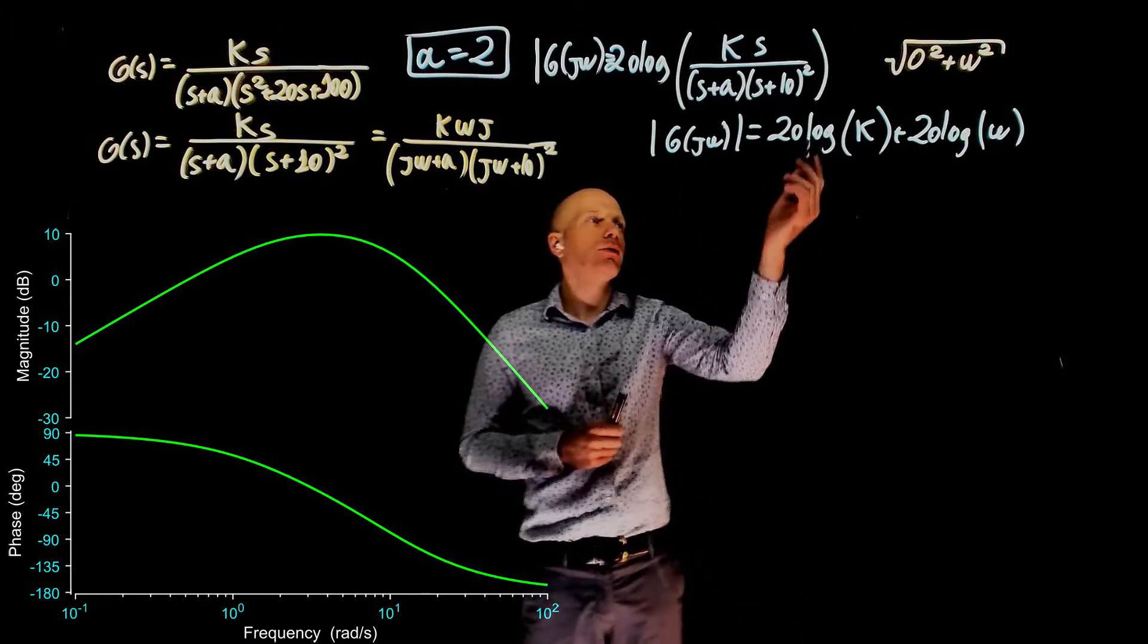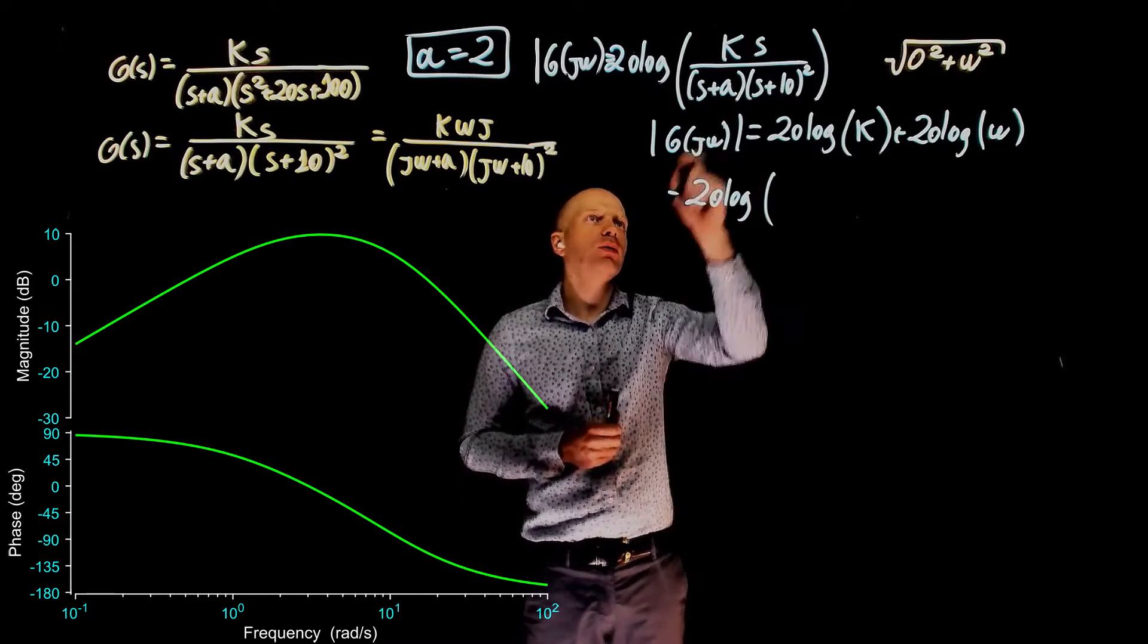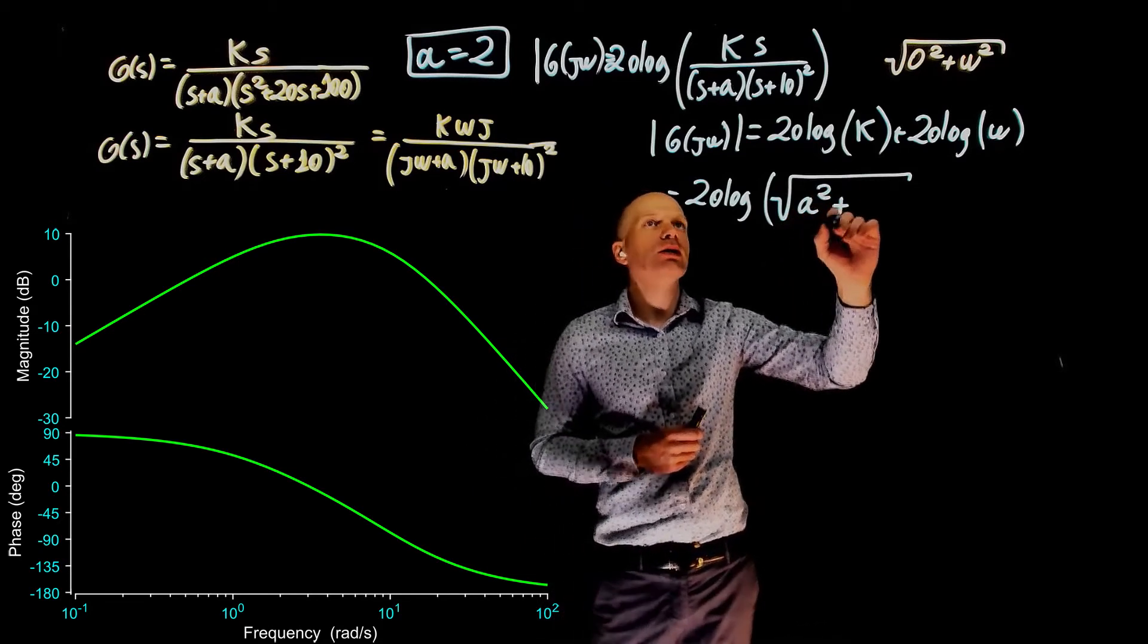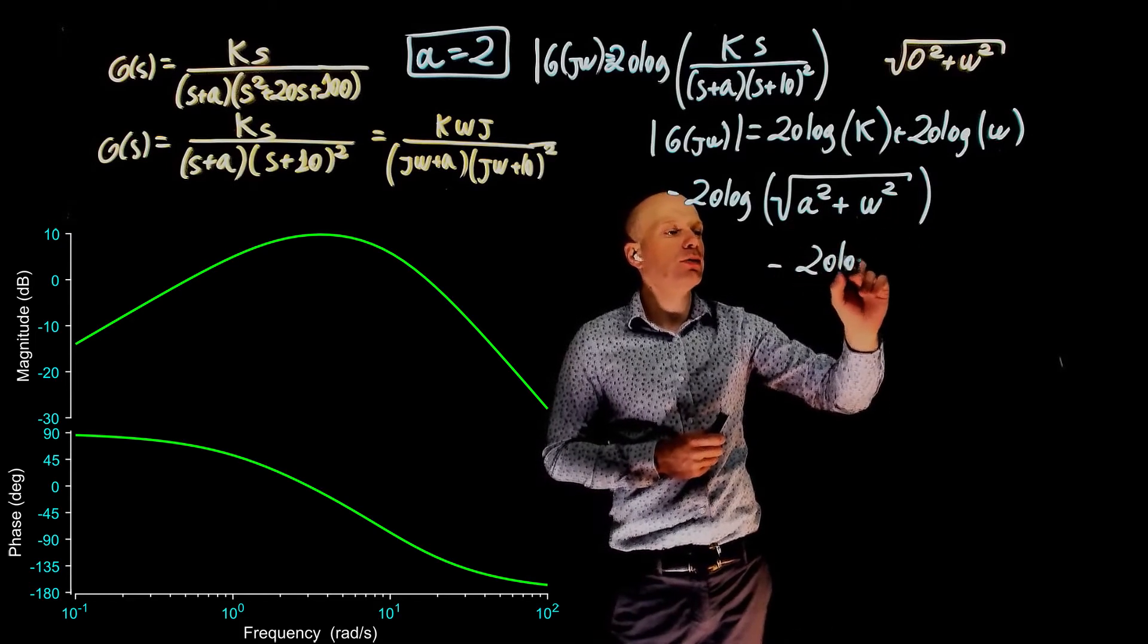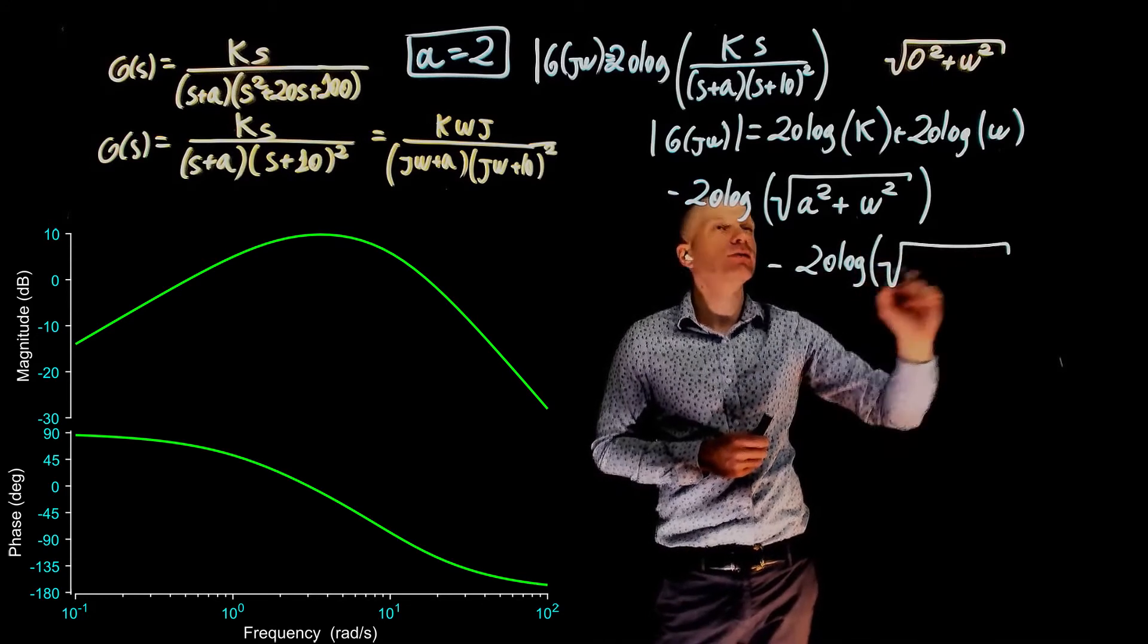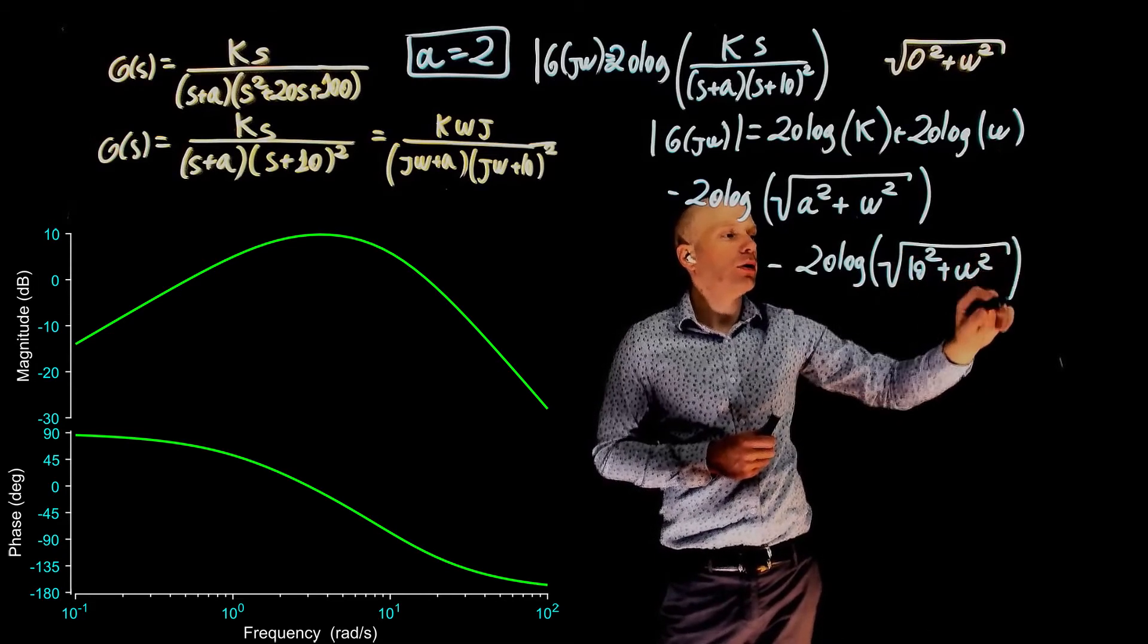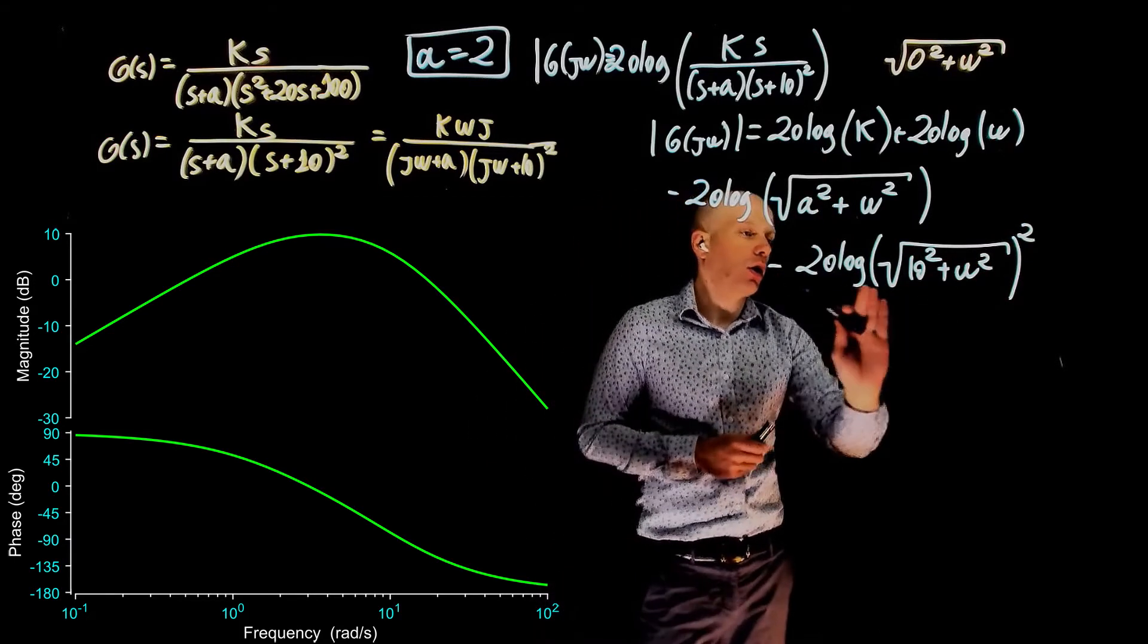Minus the magnitude of all poles, so minus 20 log of, replacing s with j omega, the magnitude here is square root of real part squared, a squared, plus imaginary part, omega squared. Minus 20 log of the other pole, which is square root of real part squared, 10 squared, plus imaginary part squared, omega, all this squared because of that value, or negative 40 log of this.